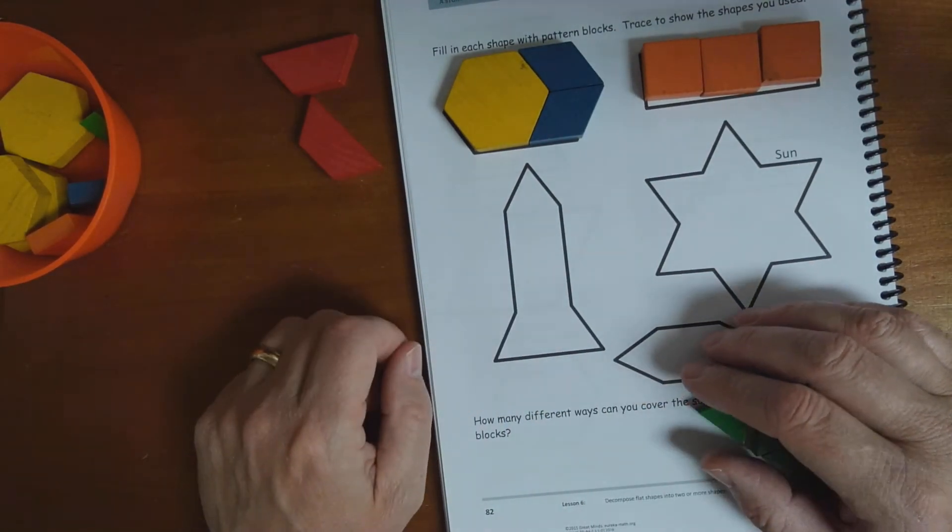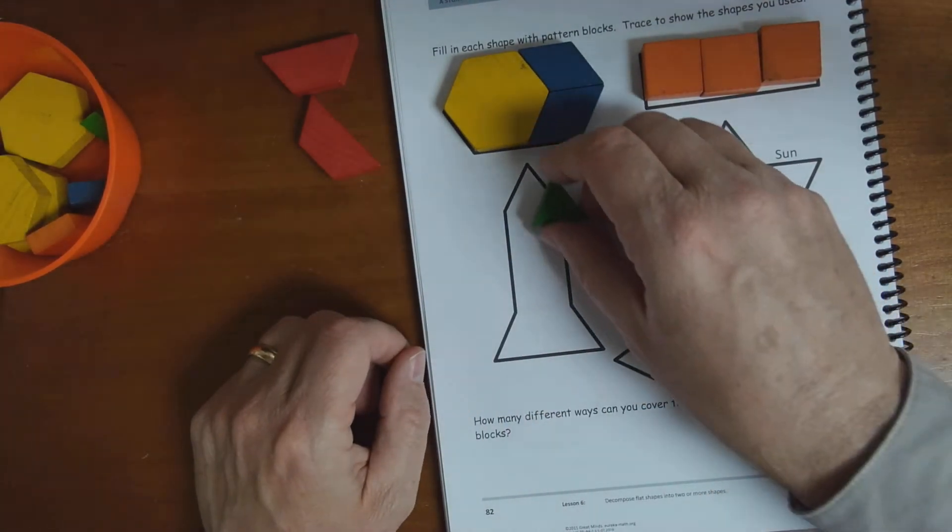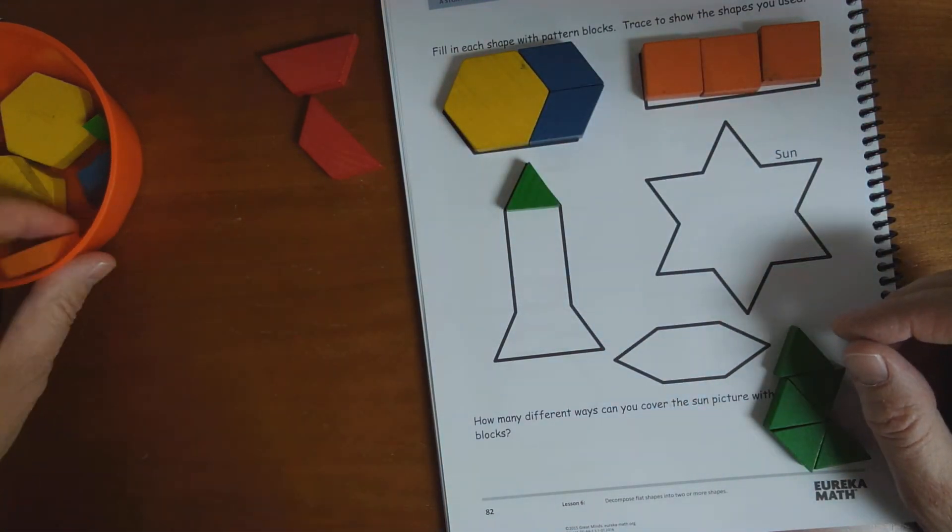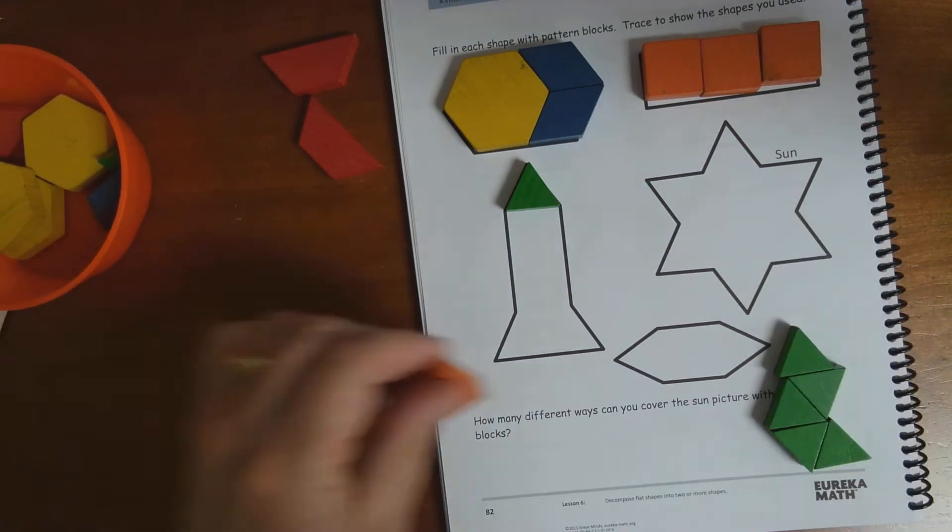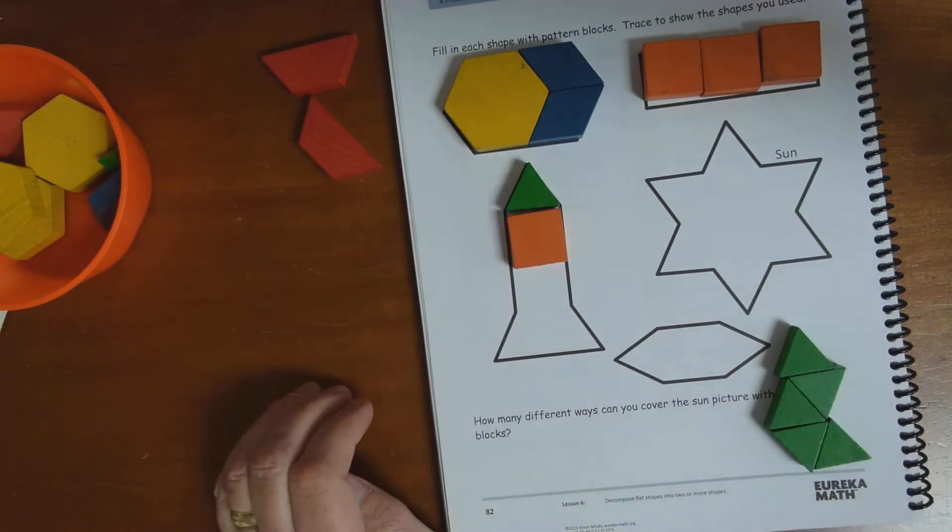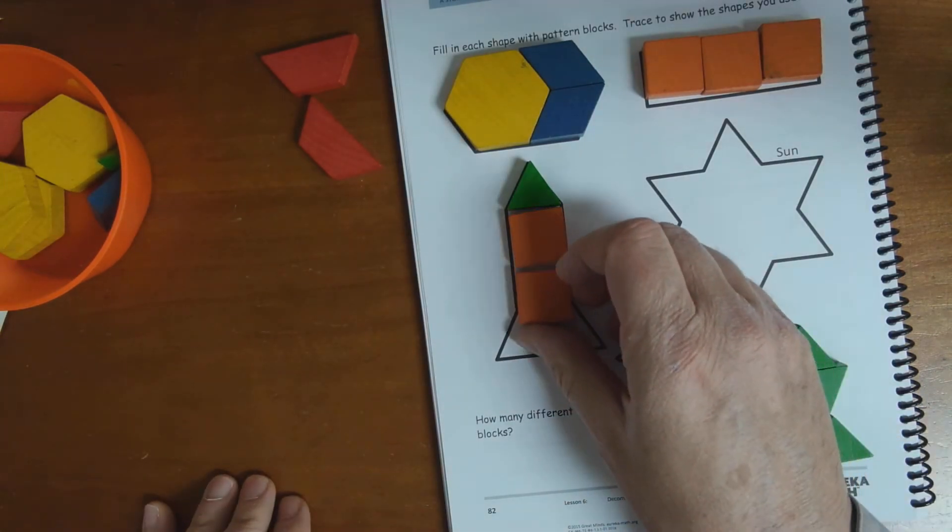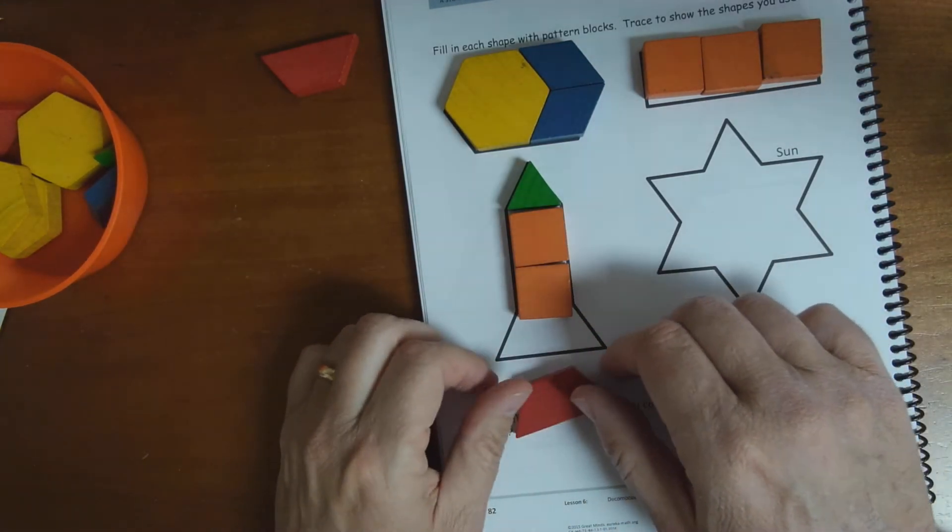What could I use to cover this up? Well, I like having this at the top, right? I'm going to need some squares. I'm going to grab another square. And then what goes down here? One of those trapezoids.